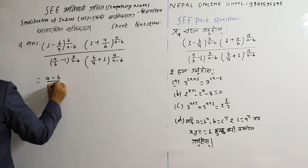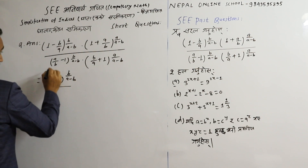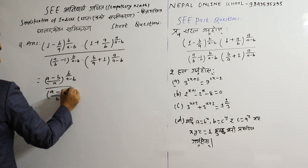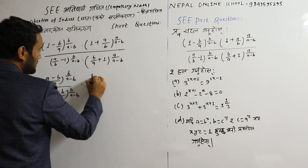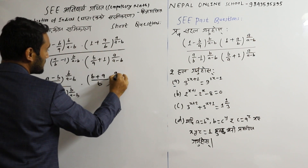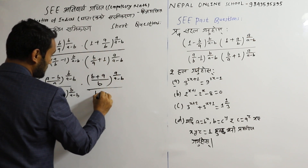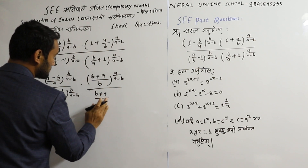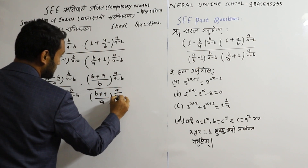So, a minus b by a, power b upon a minus b, upon A minus B by B to power B upon A minus B. And here B plus A divided by B to power A upon A minus B, divide by B plus A divided by A to power A upon A minus B.